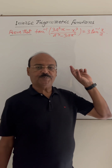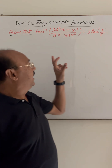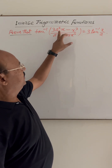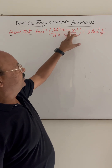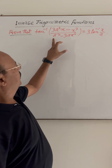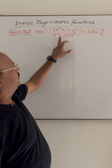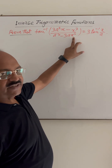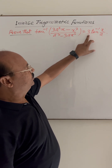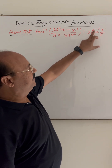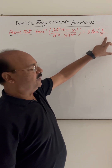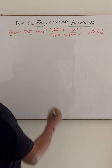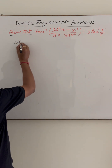The question is: prove that tan inverse of (3a²x - x³) upon (a³ - 3ax²) is equal to 3·tan inverse of x by a. So let us start with the left hand side.